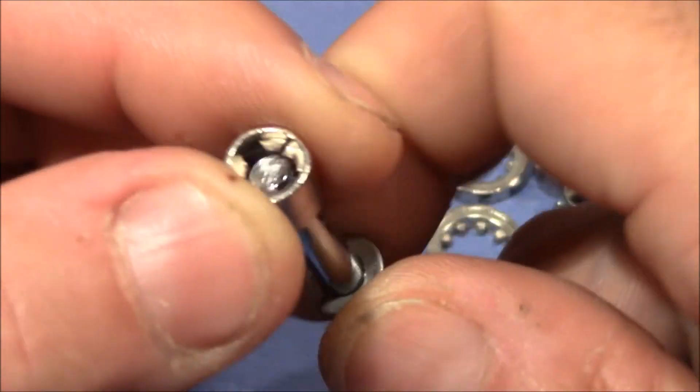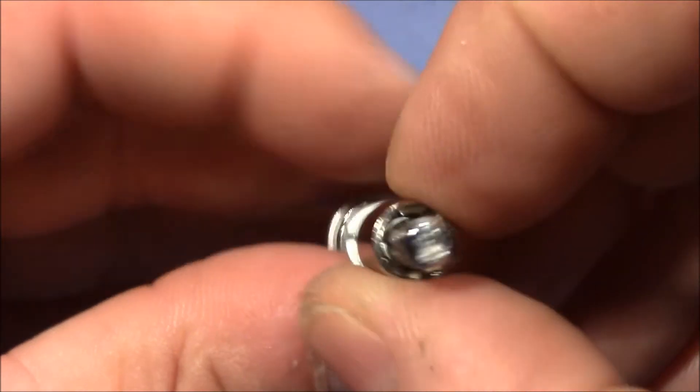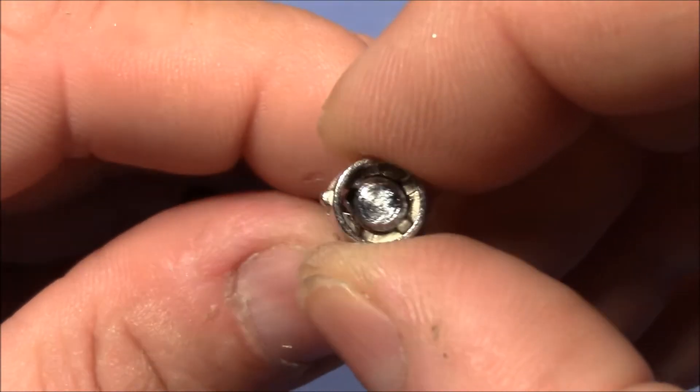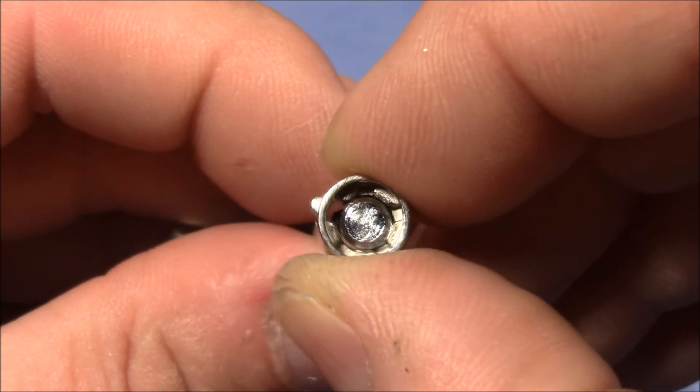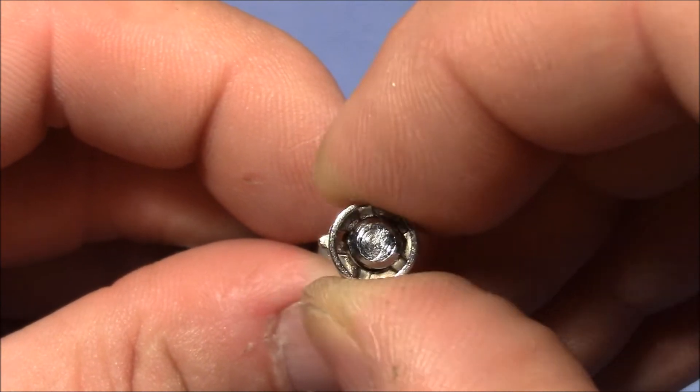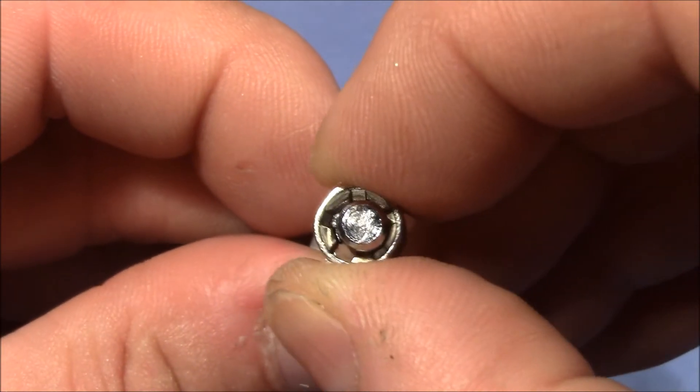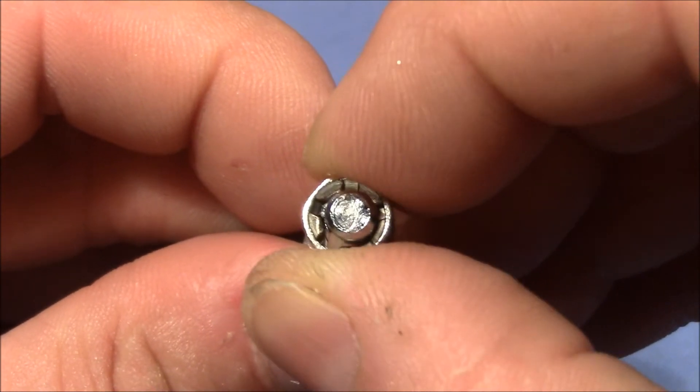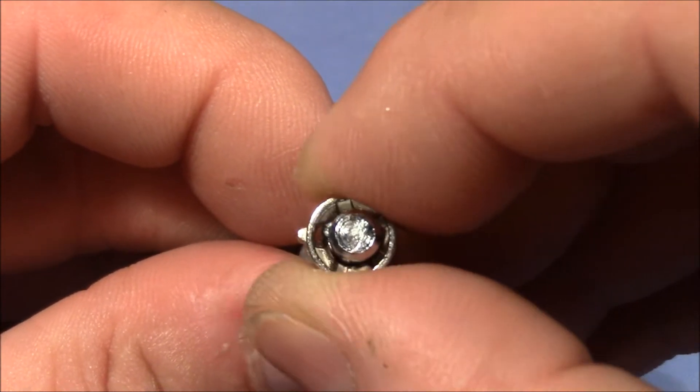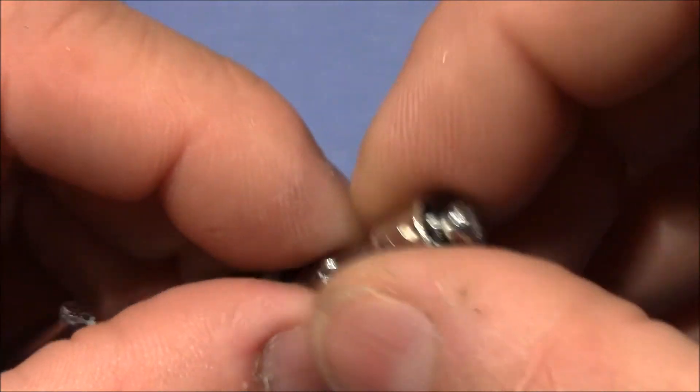When we look at how the teeth of the shackle interact with the gates, we can see why this lock is so easy to decode. When we see the play here on the true gate, that's quite a bit of movement here. And on the false gate, there is almost no movement. So that's why these locks are so easy to decode, because the difference in the feedback from true and false gate is so big.